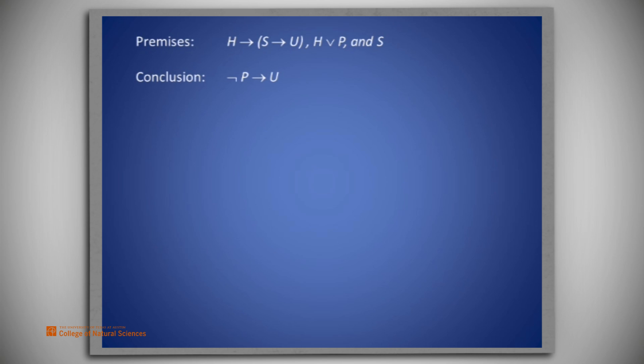Then, from the first premise, H would give us that S implies U. And finally, from the last premise S and modus ponens, we would have U.